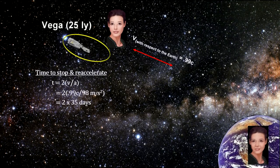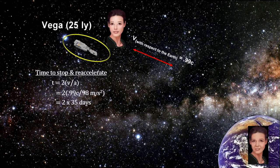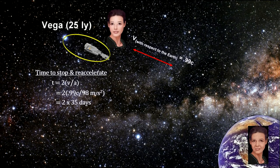Let's say her acceleration is 10 g's, or 98 meters per second squared. At this rate, it would take her 35 days to decelerate to zero, and another 35 days to re-accelerate back to 99% of the speed of light.